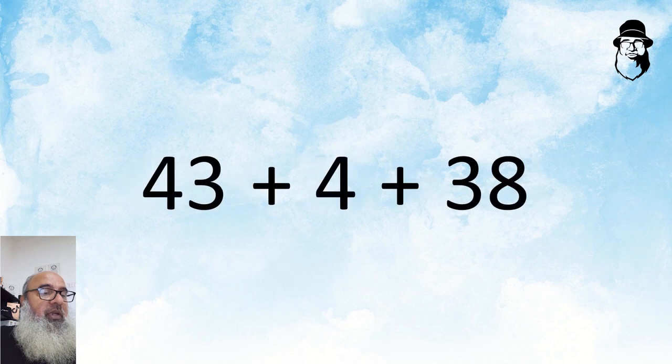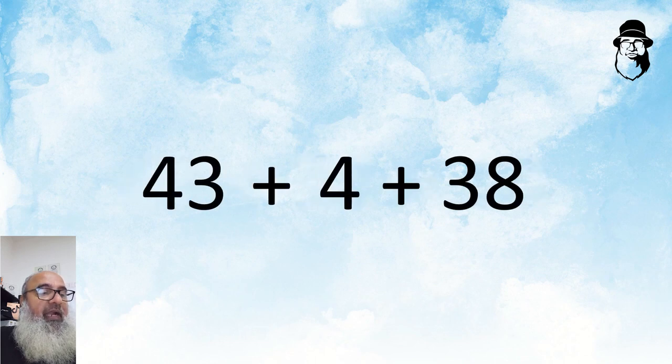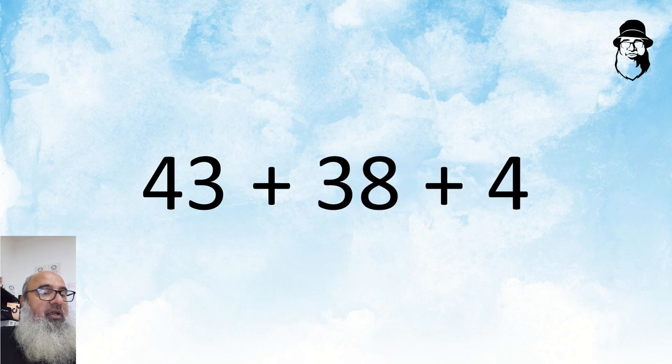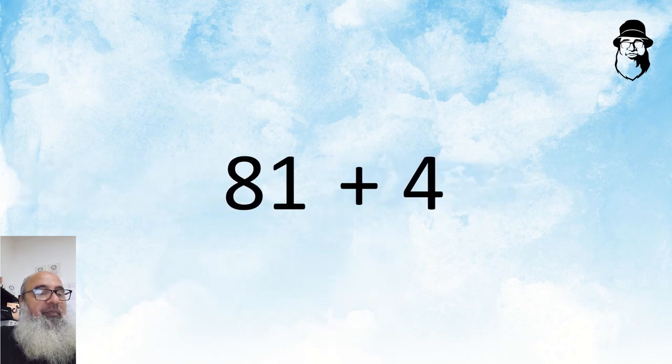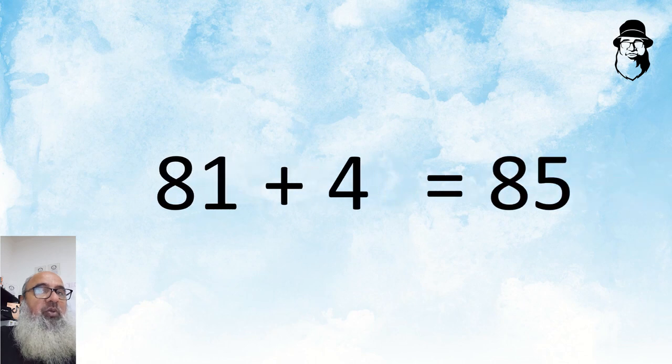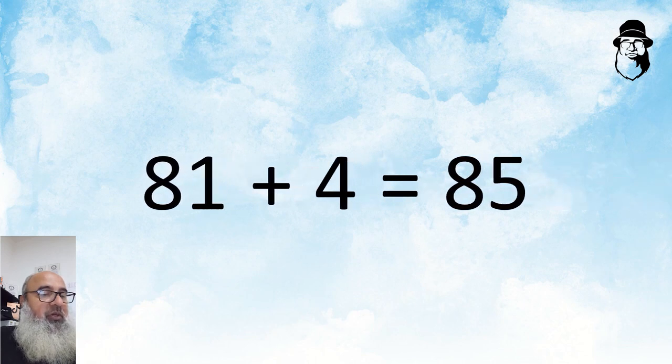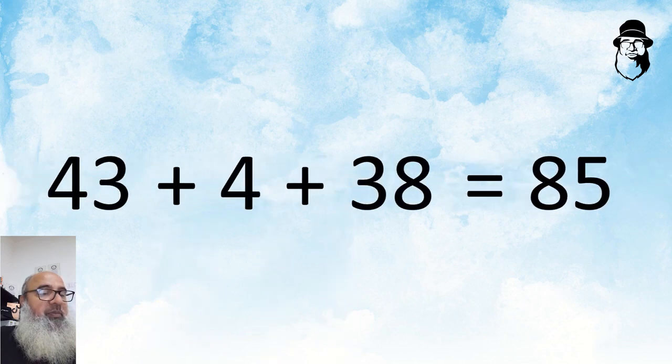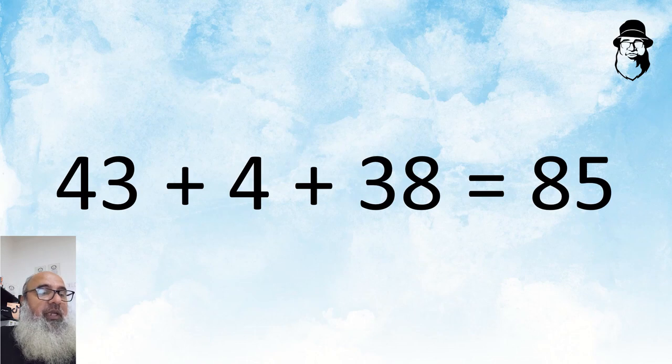Given 43 plus 4 plus 38, we can mentally add 43 and 38 to get 81 and then add the 4 to get 85. So, 43 plus 4 plus 38 is equal to 85.